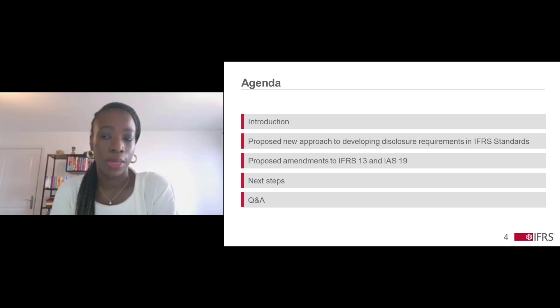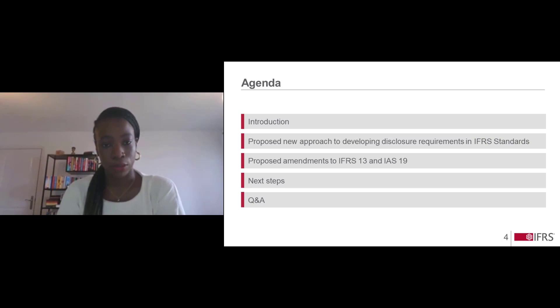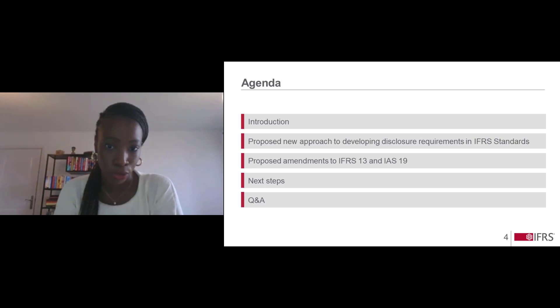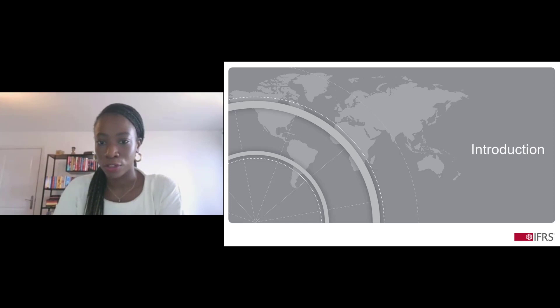Moving on to our focus for today: we'll start by explaining why the board is doing this project and the approach the board took to developing the proposals in the exposure draft. There are two parts to the exposure draft. After giving an introduction, we'll provide an overview of the main proposals in each part. Then finally, we'll talk about next steps, the feedback the board is looking for, and the different ways you can get involved.